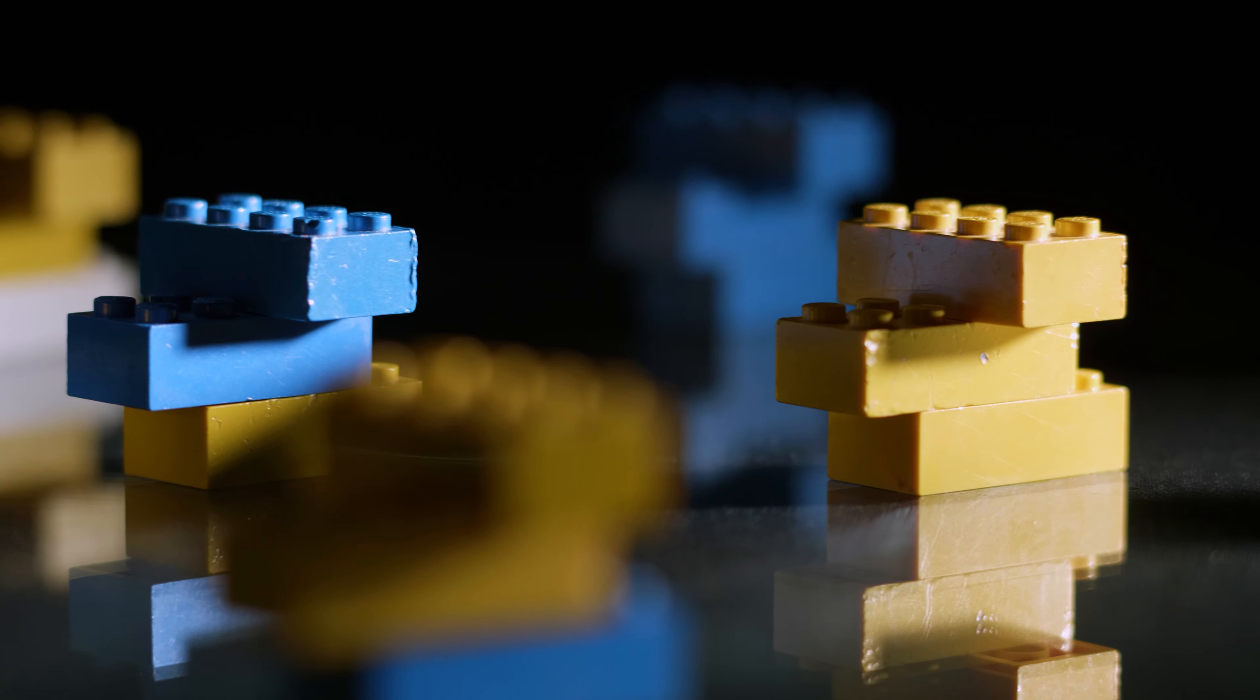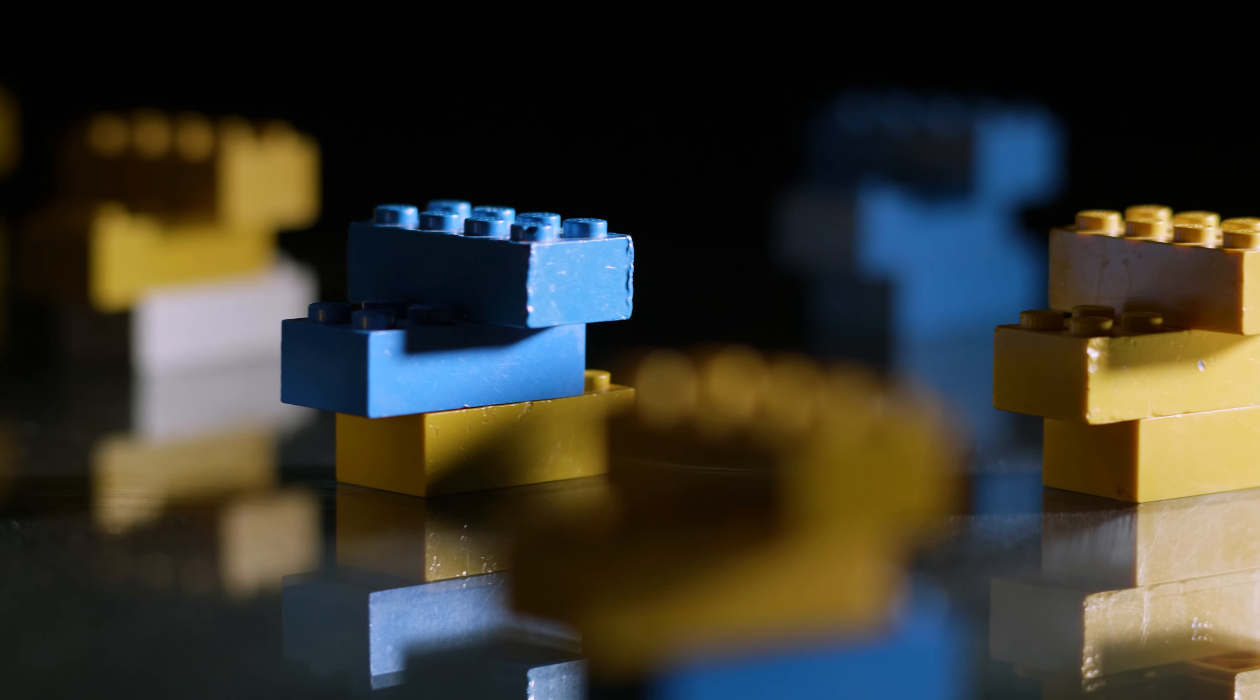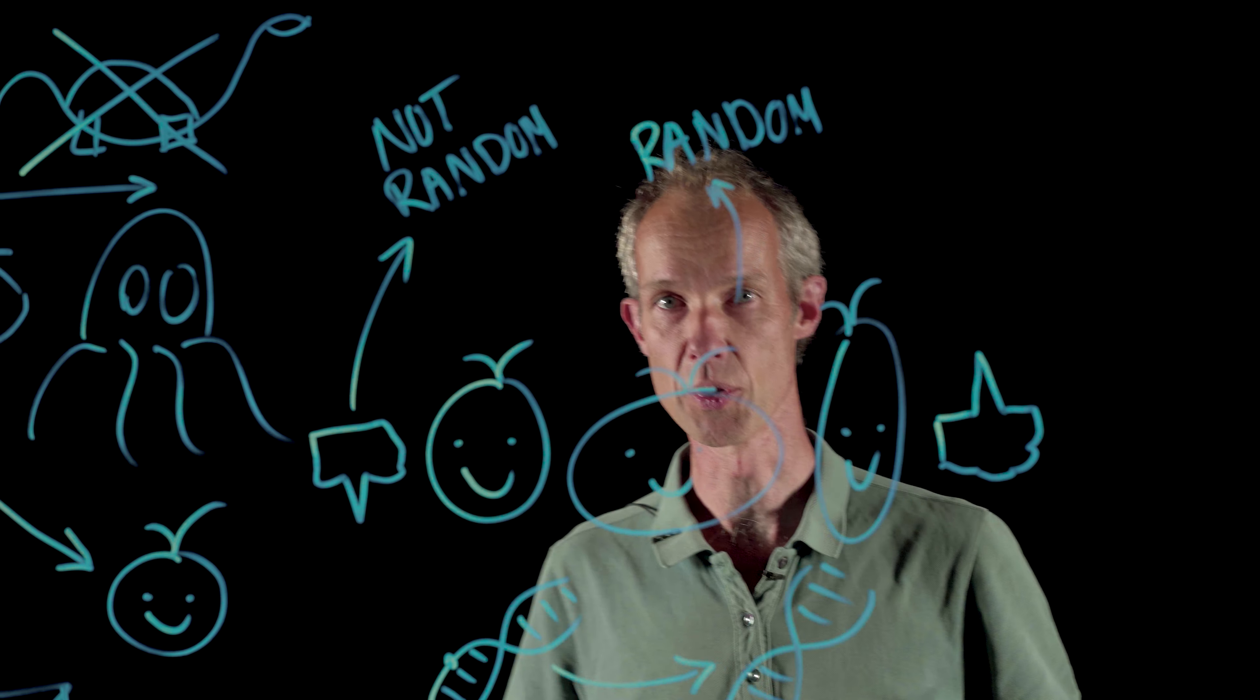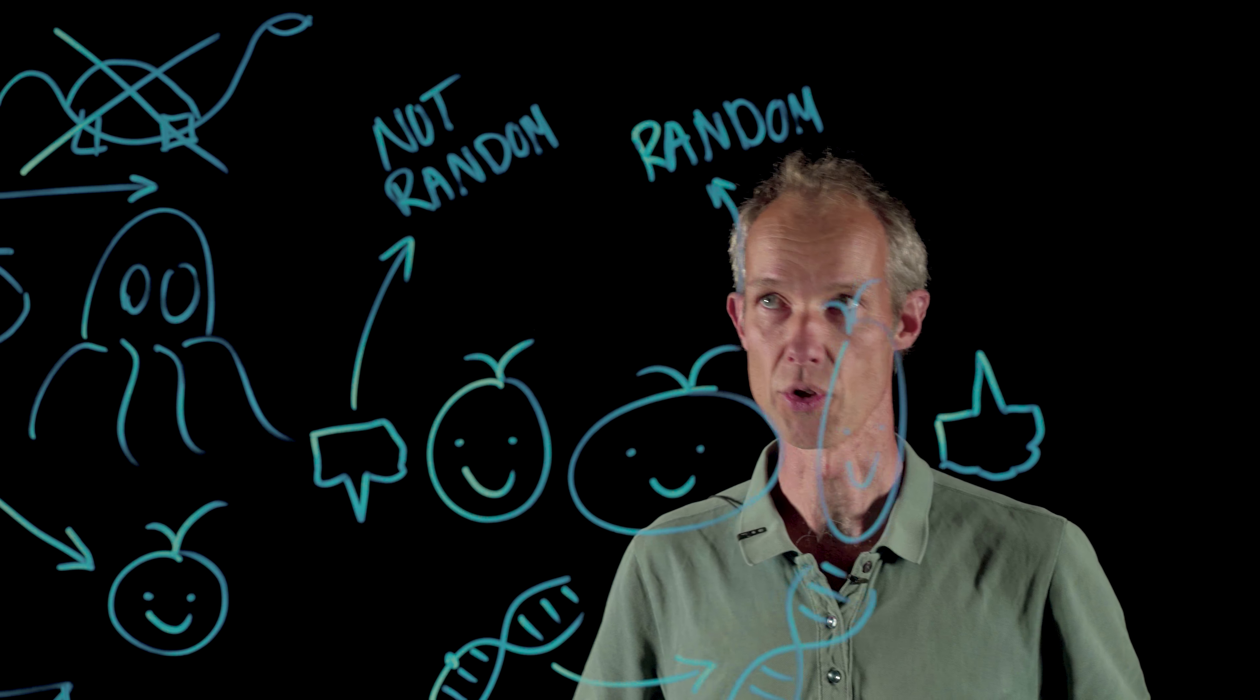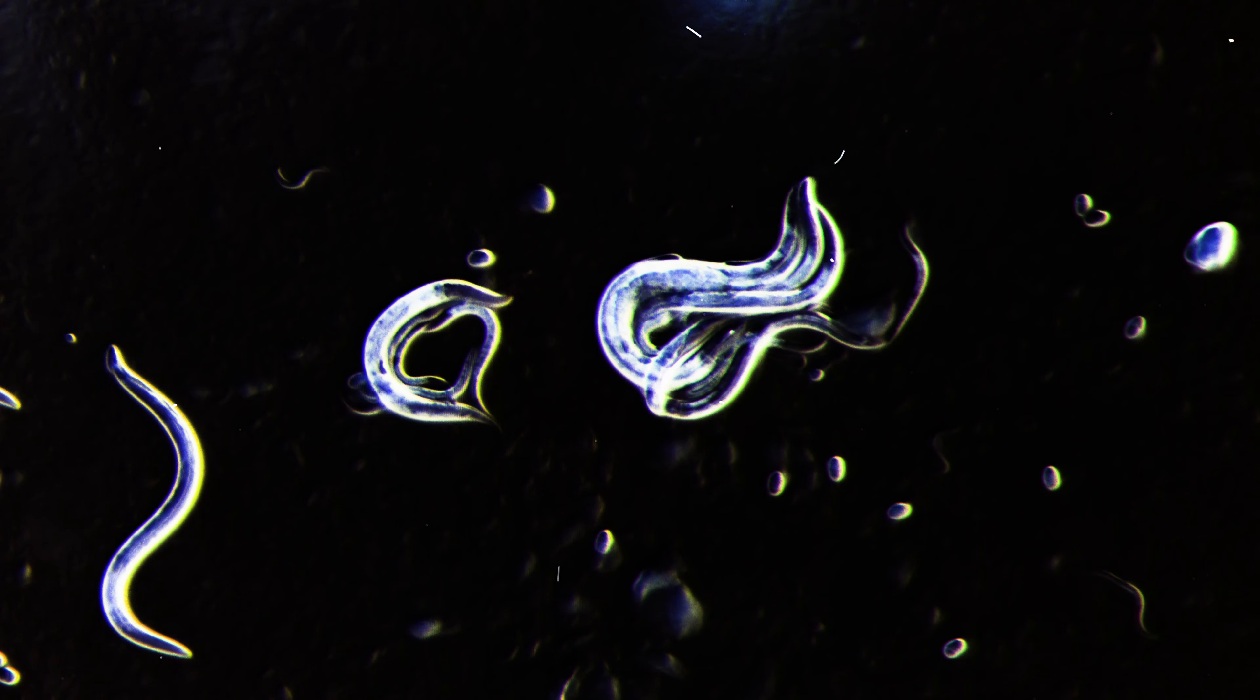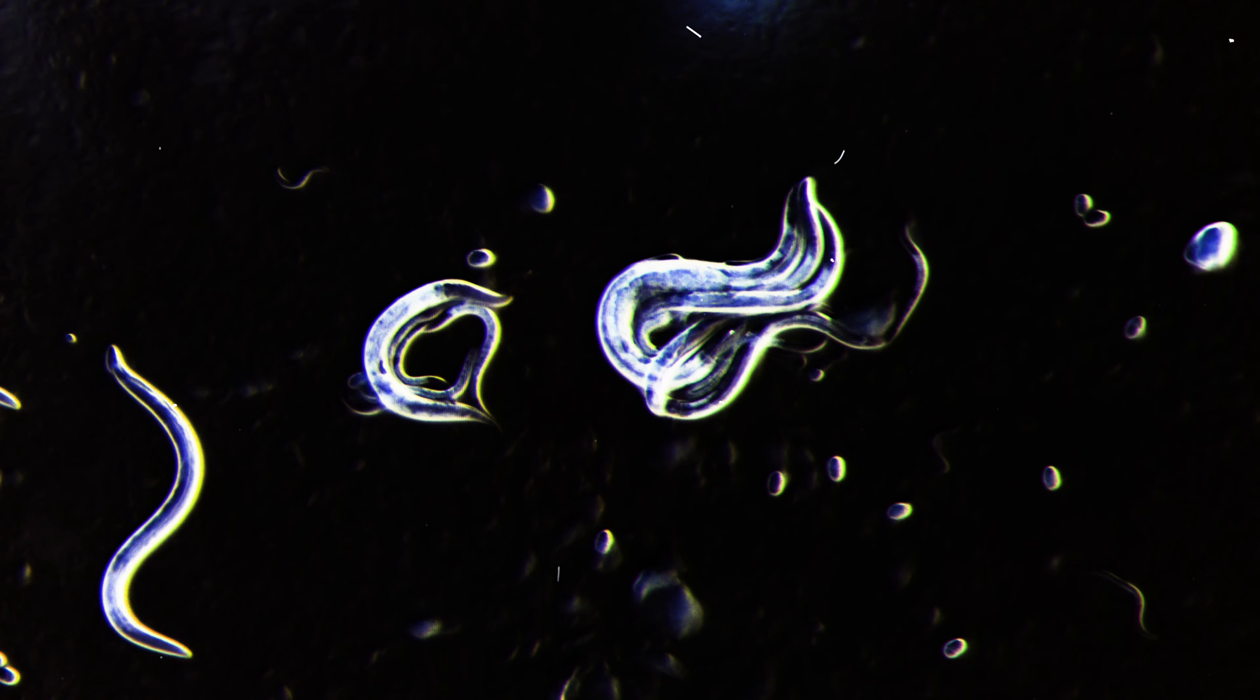All of this variation in both looks and in DNA is random. Some individuals have a better chance of surviving and leaving offspring than other individuals. This is what we call selection, and selection is very much not random. Because selection is not random, we may be able to predict what will happen during the course of evolution.